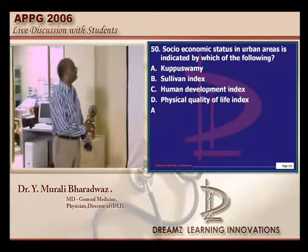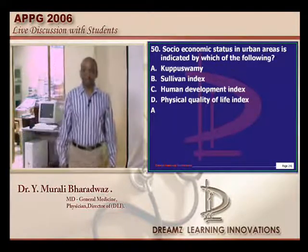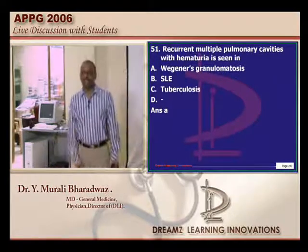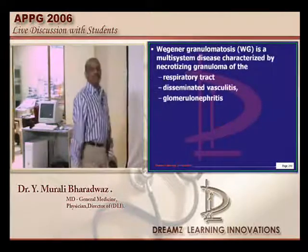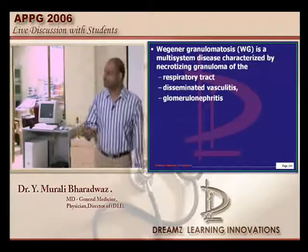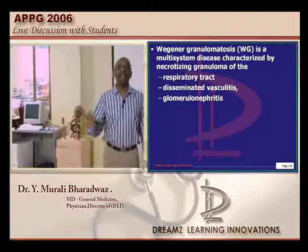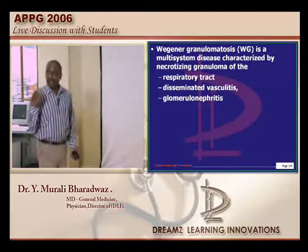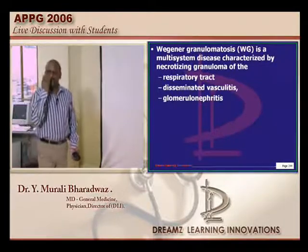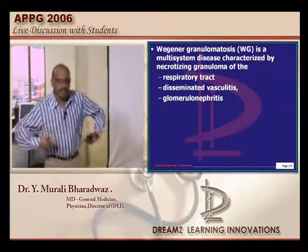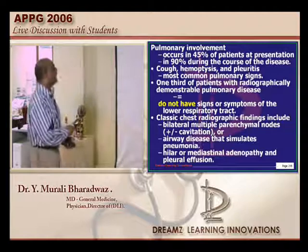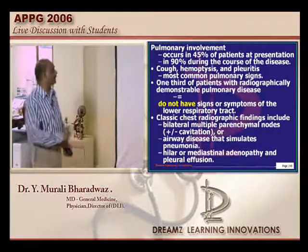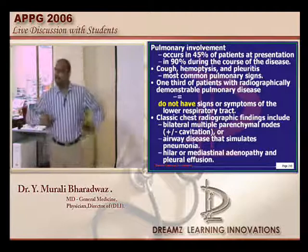Socioeconomic status is indicated by the Kuppuswamy scale. Moving to general medicine: recurrent multiple pulmonary cavities with hematuria — Wegener's granulomatosis. Patients can have sinusitis-like clinical features, hemoptysis due to cavitary lesions in the lung, and glomerulonephritis with hematuria. This conglomerate of necrotizing granulomas is called Wegener's granulomatosis. Pulmonary involvement is found in about 45% of patients at presentation and 90% during their course.